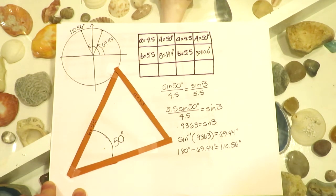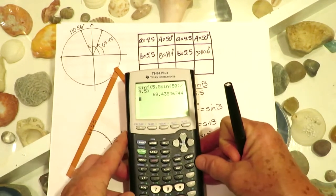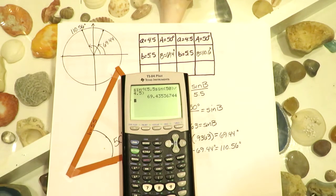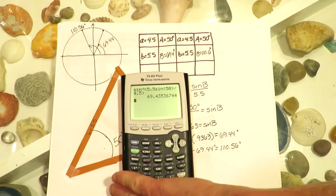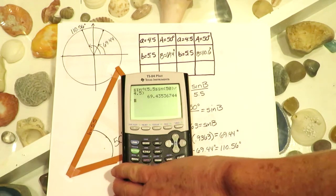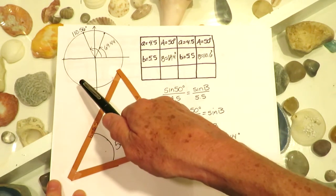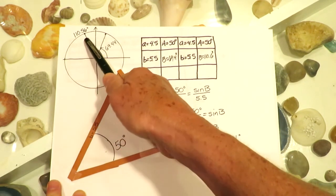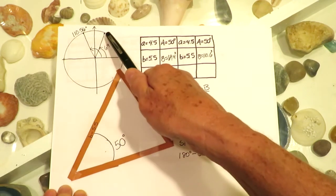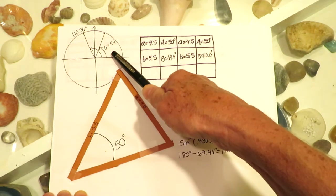Taking the inverse sine of 5.5 times sine of 50 divided by 4.5, I get 69.44 degrees. So 5.5 times sine of 50 divided by 4.5 gives the value 0.9364, and inverse sine of that number gives 69.44 degrees. Remember, sine is the y-coordinate as we move around the unit circle, so there's always a second angle less than 180 degrees with the same sine value. Also, we're working in degrees, so your calculator should be in degree mode.